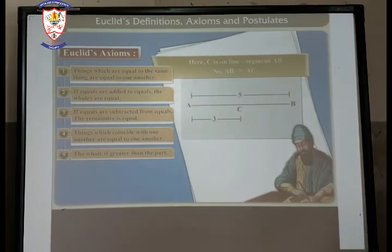We have taken here C is on the line segment AB. First of all, we have taken a line segment AB which is of five units. And then we have taken a C point in between of the line segment, that is three centimeter away from point A. So, AB is always greater than AC.